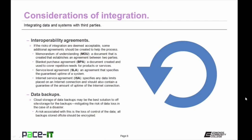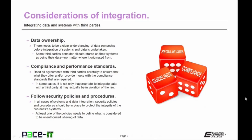There should be a service level agreement, or SLA — an agreement that specifies the guaranteed uptime of a system. And there may also be the need for an internet service agreement, which specifies any data limits on an internet connection and should contain a guarantee of uptime. Another consideration of integration is data backups. Cloud storage of data backups may be the best solution to off-site storage, mitigating the risk of data loss in the case of a disaster. But there is a risk because that backup of your data is no longer in your possession. To mitigate this risk, all backups stored with a third party should be encrypted.